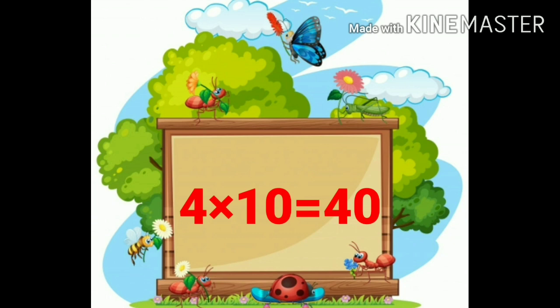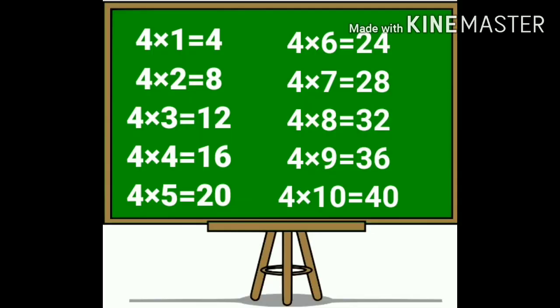Again we learn table of four. Four ones are four. Four twos are eight. Four threes are twelve. Four fours are sixteen. Four fives are twenty. Four sixes are twenty-four. Four sevens are twenty-eight. Four eights are thirty-two. Four nines are thirty-six. Four tens are forty.